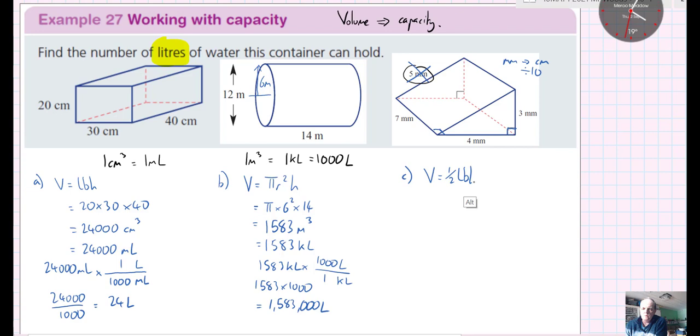So the volume of a triangular prism, because you can always fit two of them into a rectangular prism, the volume is a half of the length times the breadth times the height. So I've got a half times by 3 times 4 times 7 millimeters, but I want them in centimeters, so each of them are going to be divided by 10. So 0.3 times by 0.4 times by 0.7.